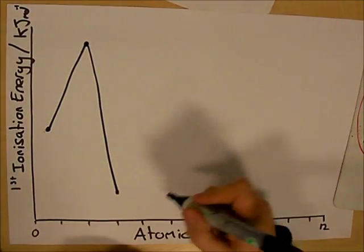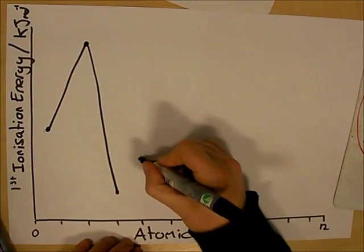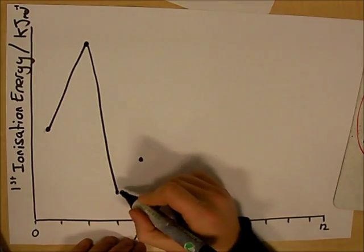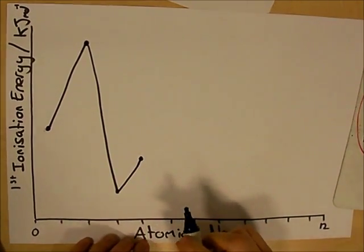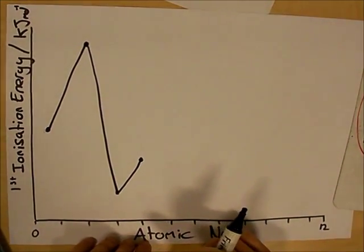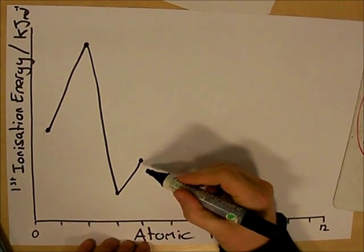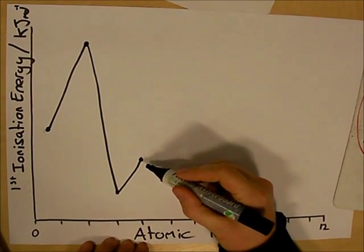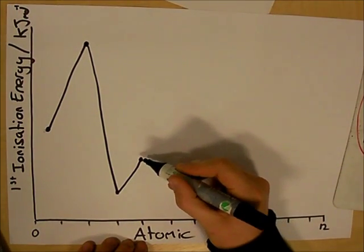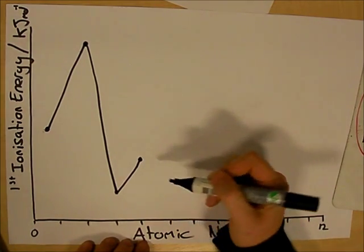The next element with atomic number 4 has an increase in first ionisation energy due to the fact that it has an increased nuclear charge. We've added another proton and another electron, which means the nucleus is more positive and holding onto the electrons more tightly.